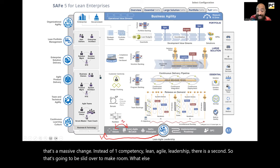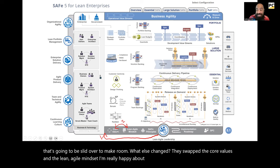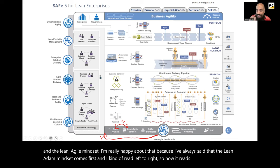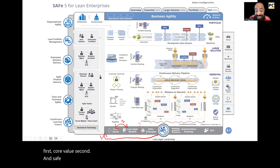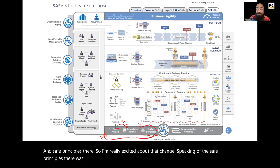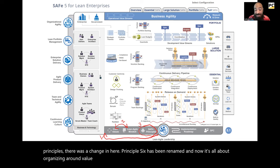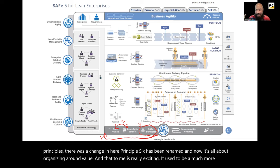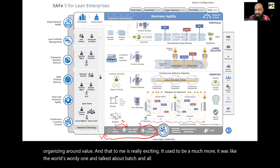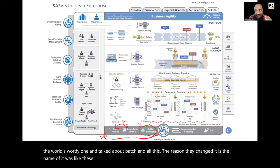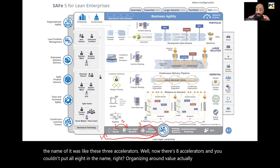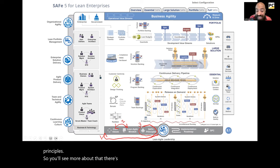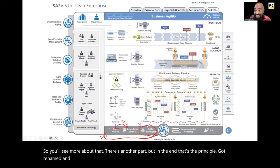They swapped the core values and the lean-agile mindset. I'm really happy about that because I've always said that the lean-agile mindset comes first, and now it reads left to right — mindset comes first, core values second, and SAFe principles third. Speaking of the SAFe principles, there was a change: Principle 6 has been renamed and now it's all about 'organizing around value.' It used to be much more wordy, talking about batch and these three accelerators. Now there are eight accelerators, and 'organizing around value' actually aligns better with the principles.